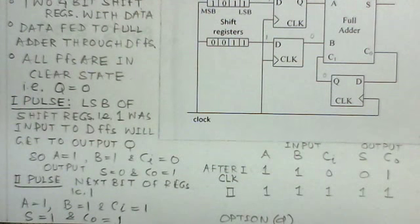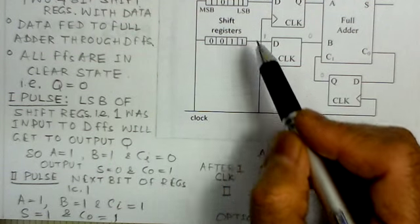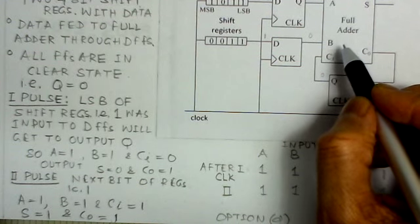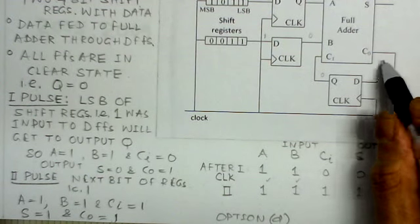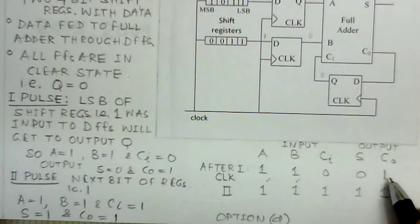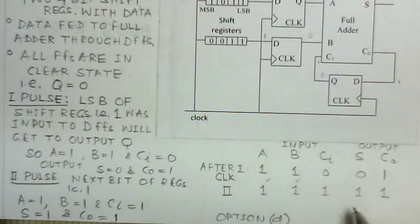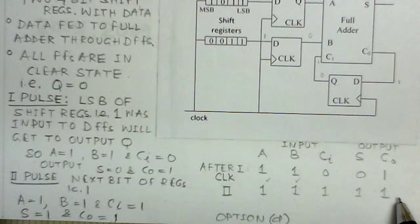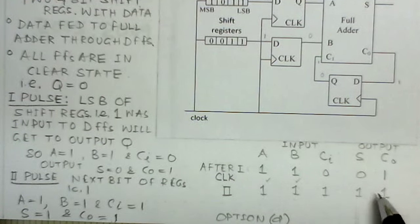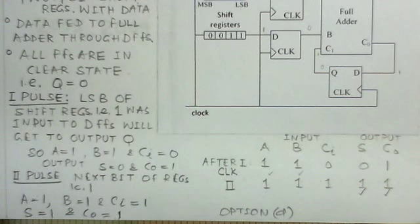When the second clock pulse is applied, the next bits of both shift registers — again one and one — are transferred into the A and B inputs of the full adder. So A is one, B is one. The carry-in Ci this time is one, because the previous carry-out was one and gets transferred by the next clock. So A=1, B=1, Ci=1: one plus one plus one gives sum one with carry-out one.